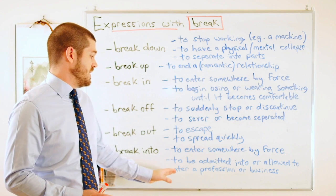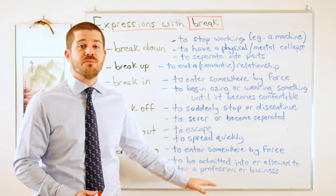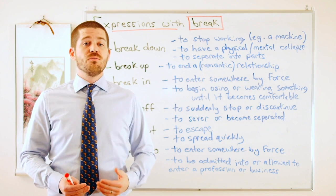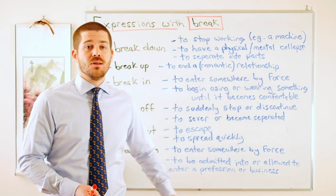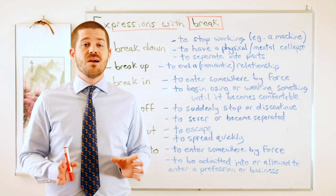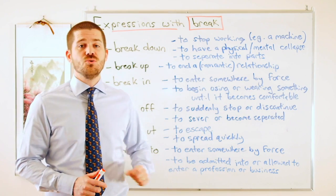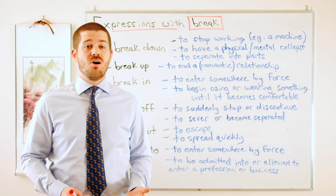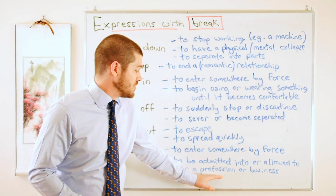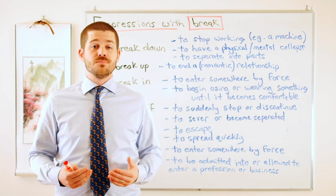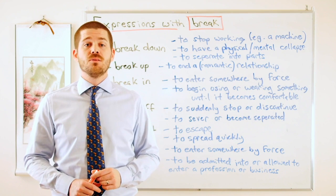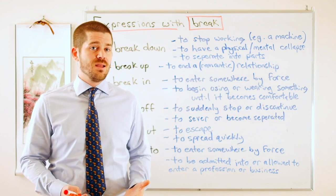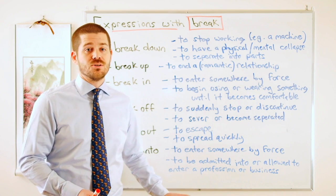And we got one more definition. It says to be admitted into or allowed to enter a profession or a business. A good example would be breaking into Hollywood. Of course many actors want to enter Hollywood. But they can't. It's very difficult. Very few people get to break into Hollywood. So again it says there to be allowed to enter. Not everybody is allowed to enter Hollywood. It's very competitive. It also says a profession. So think about if I want to be a lawyer or a doctor. Not everybody can become a lawyer or a doctor. So you need to break into the law profession or break into the medical profession. So again you have to be admitted or allowed to enter those professions.